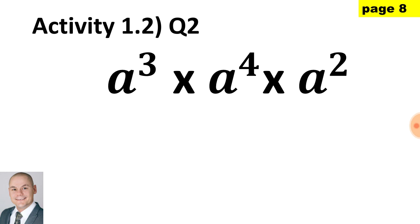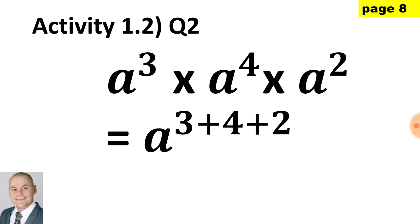In question 2, when multiplying bases that are the same we would add the exponents. Therefore we would have a to the 3 plus 4 plus 2, and that would give us a to the 9.